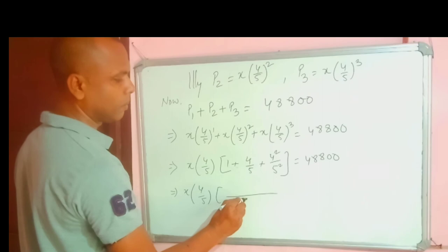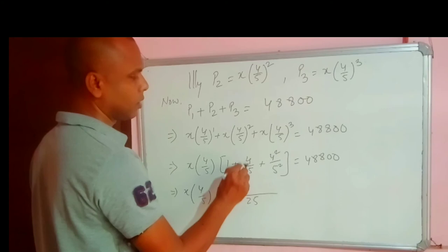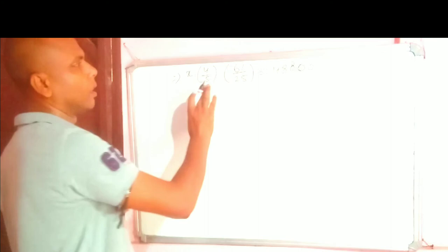The last one will be LCM. In each case, if there are 3 installments. So 25, 1 to 25. In the second case, just multiply with this 4 and 5. 4, 5 to 20. So 25 plus 4 square is 16. After adding we got X 4 by 5, 61 by 25.